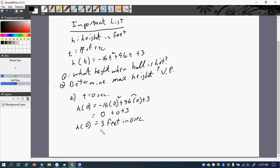And so here's the first answer. Now we do b, determine the maximum height. We have to find vertex point. So that's going to be x equal to negative b over 2a. We know a is negative 16 and b is 96.